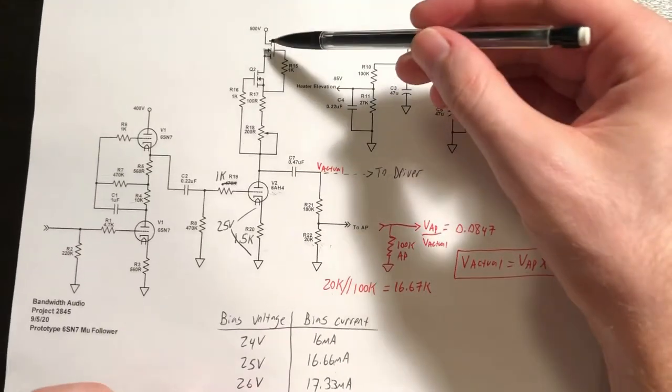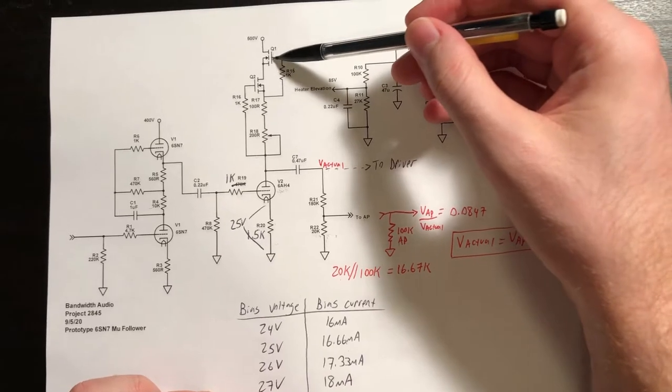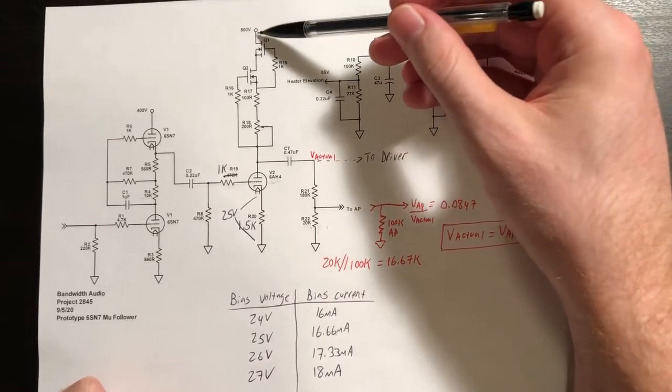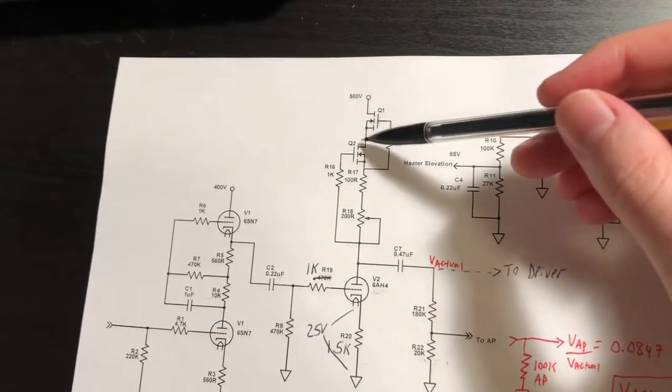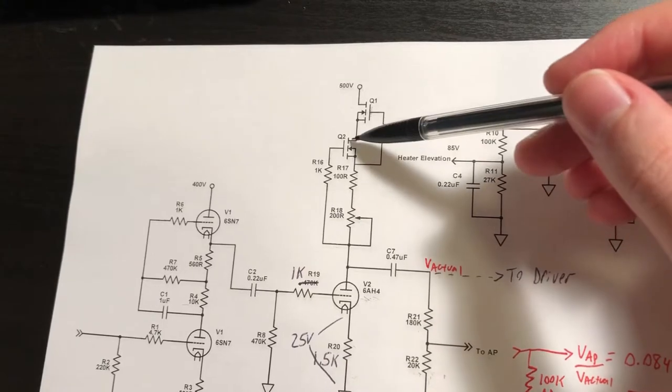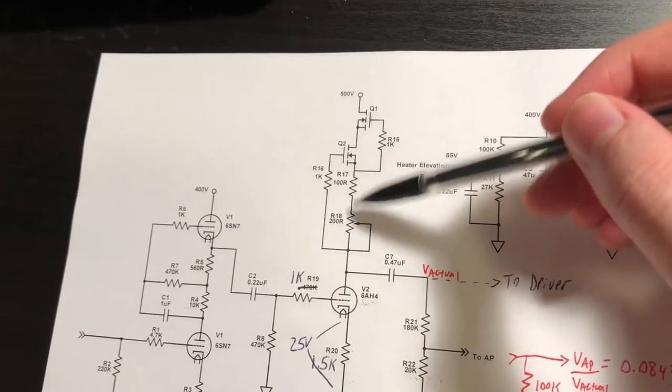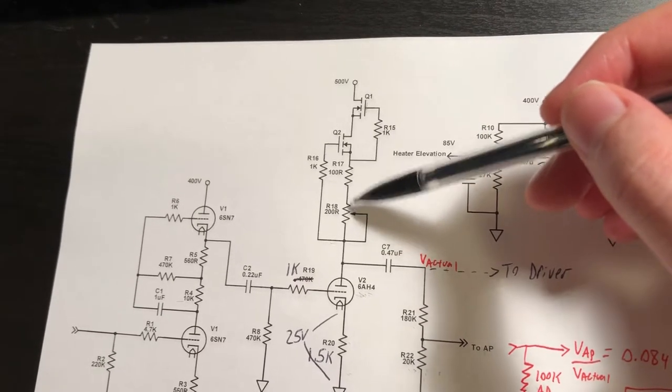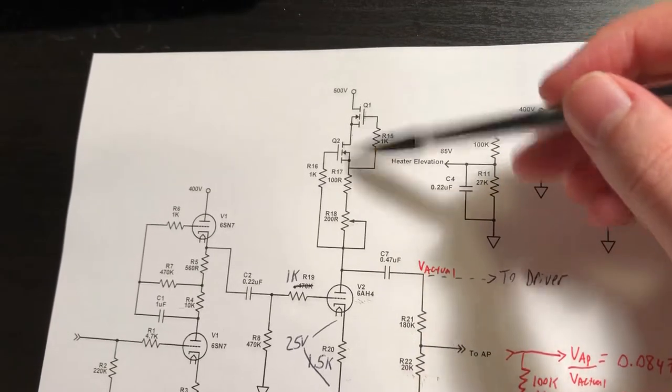The reason the top transistor needs a heat sink is this transistor, or depletion mode MOSFET, is doing essentially all of the voltage dropping from our 500V supply to our required plate voltage. The voltage drop from drain to source of Q2 is minimal because the VGS is small, as determined by the fixed resistance and our adjustable resistance, in order to set the voltage drop to then control the current through the stack.